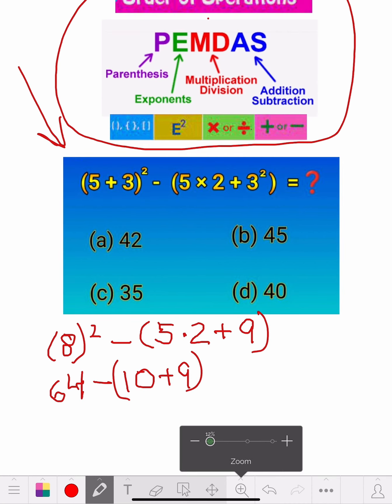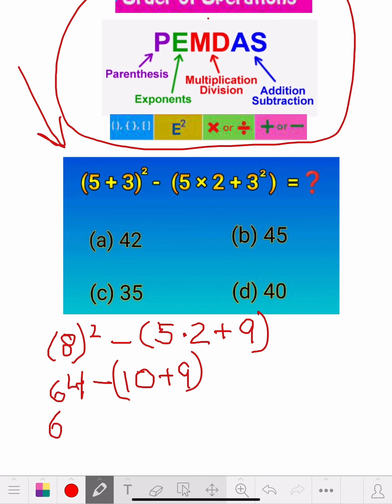We can do this. So we get 64 minus. Now we've got 10 plus 9, it's 19, equals.